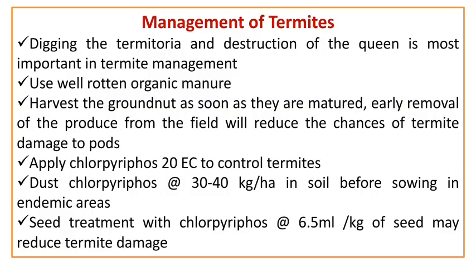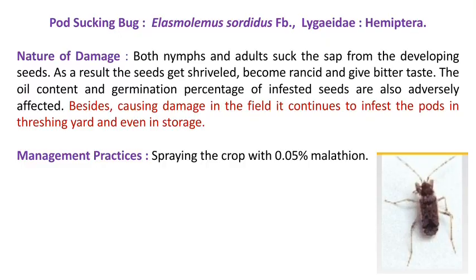The next pest is the pod sucking bug, Elasmolomus sordidus. Both nymphs and adults are the damaging stages. This pest attacks in both field and storage conditions. Both nymphs and adults suck sap from developing seeds and tender shoots. As a result of feeding, seeds become rancid, give a bitter taste, become unfit for human consumption, and lose their oil percentage. Management: spray with recommended systemic insecticides.